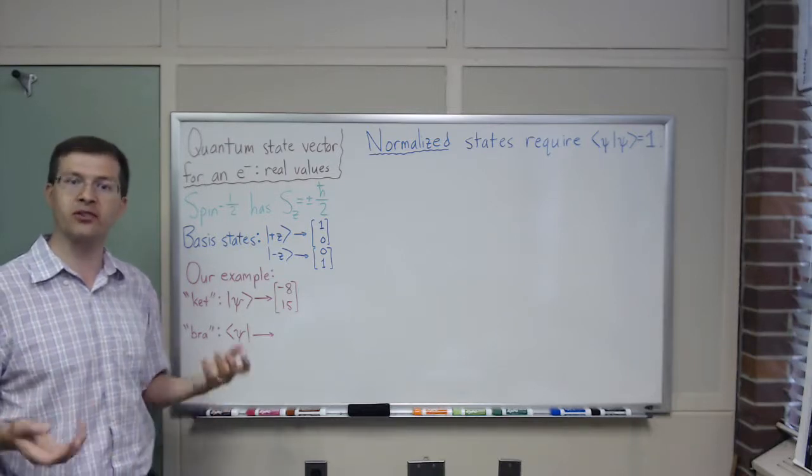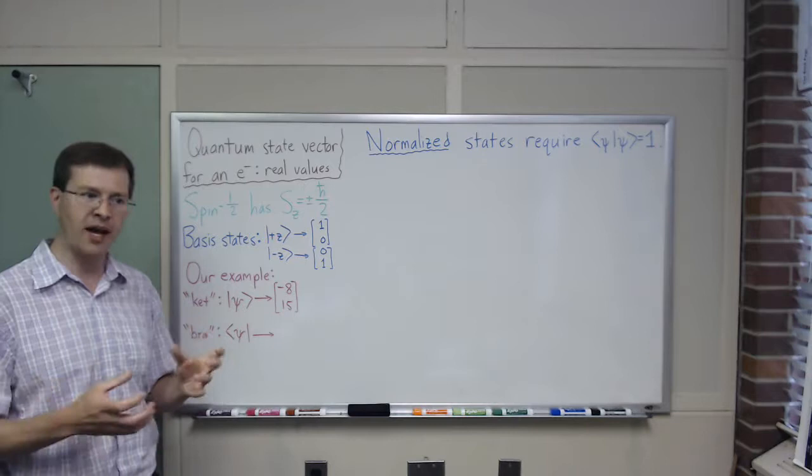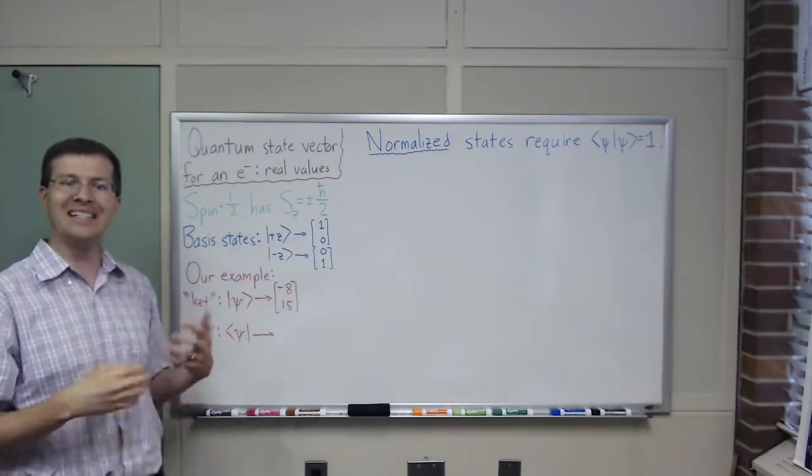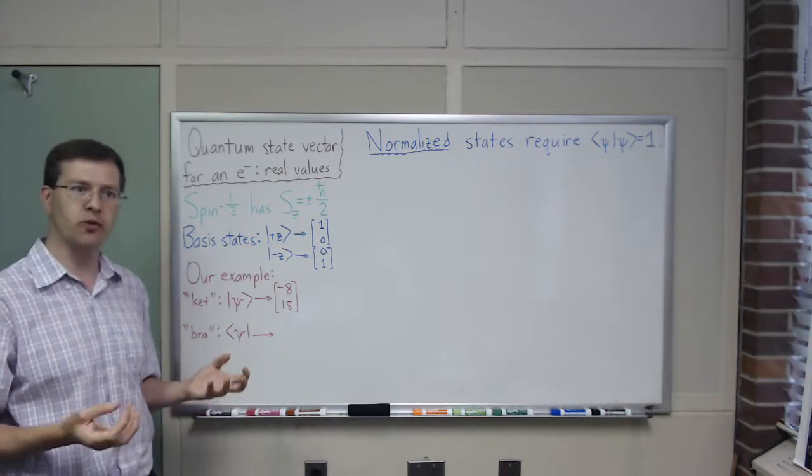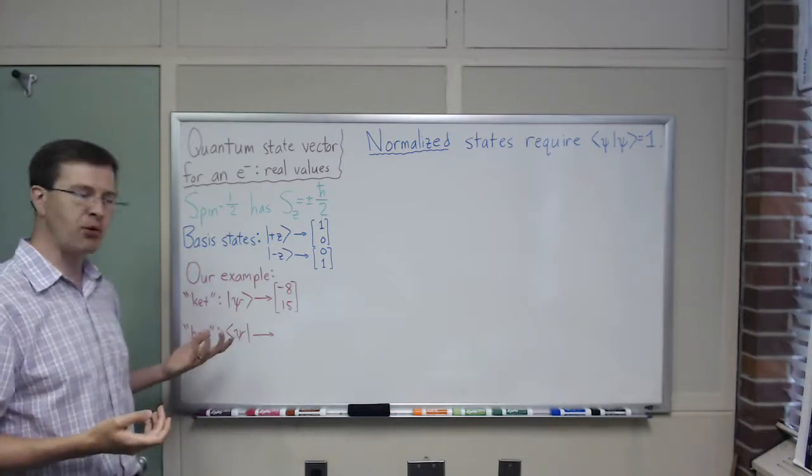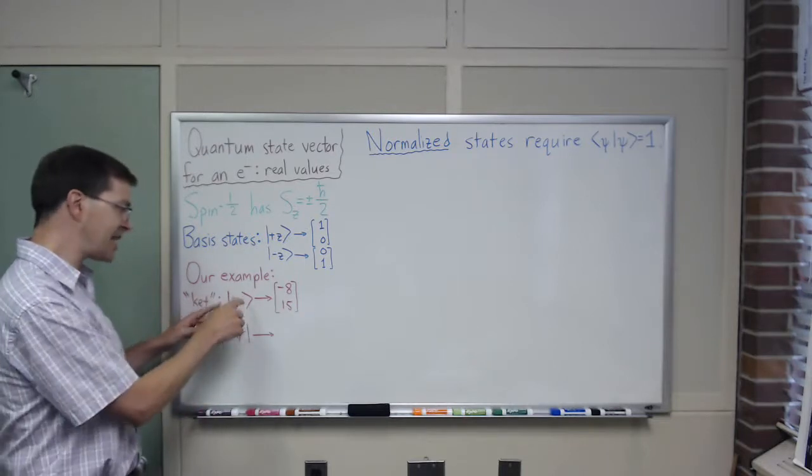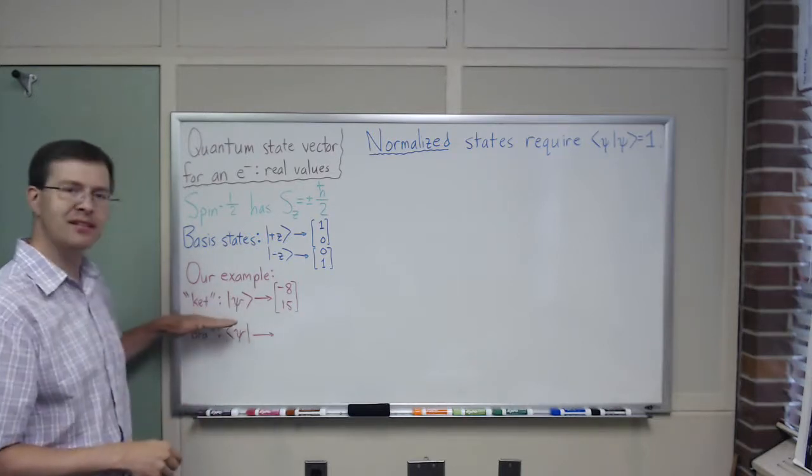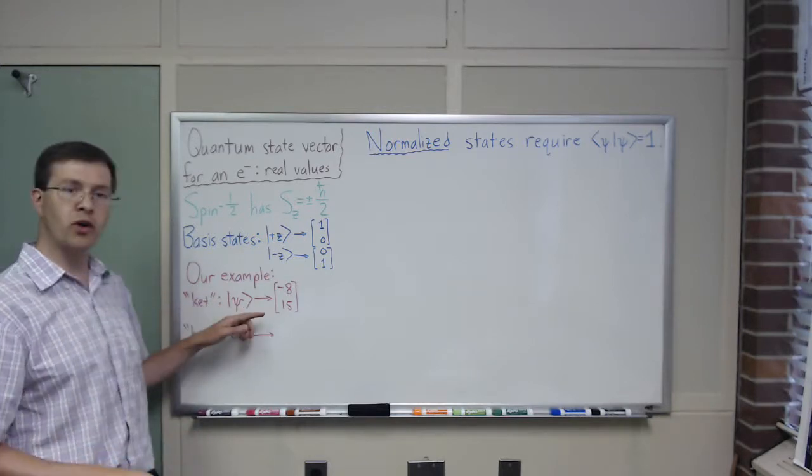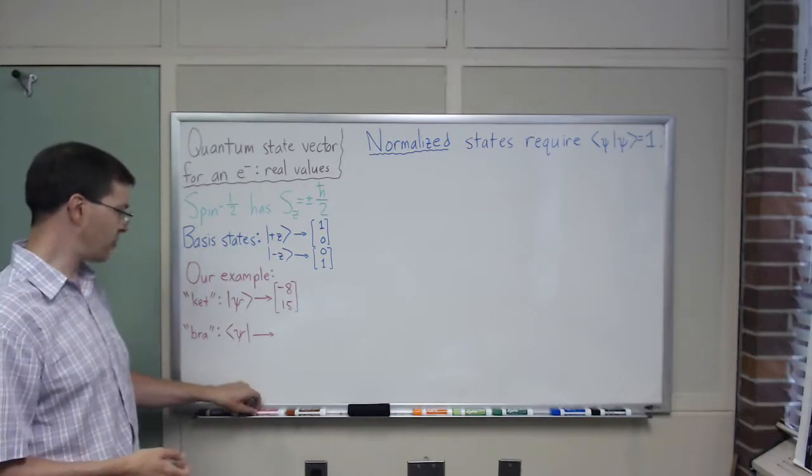For our example, we're going to look at an electron in a particular state. Or, maybe more usefully, we're going to imagine that we have some magical box that spits out electrons all in exactly the same quantum state, so that we can do statistics on them. For our example, our state, we're going to represent as ψ, put it inside these angle brackets. This ket, the ψ ket, we're going to represent as (-8, 15).